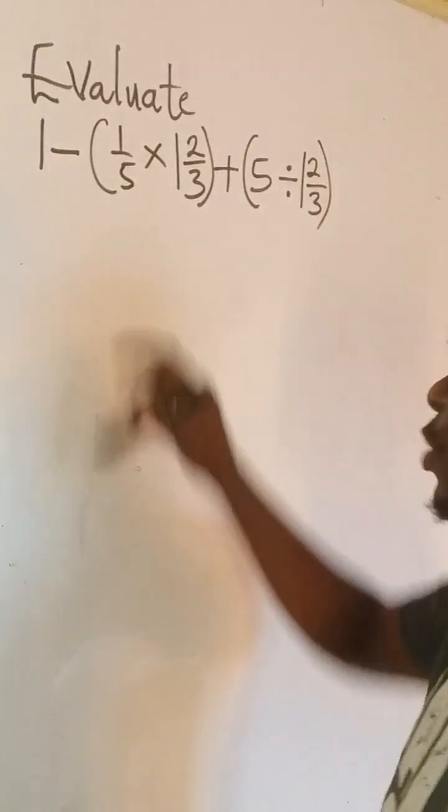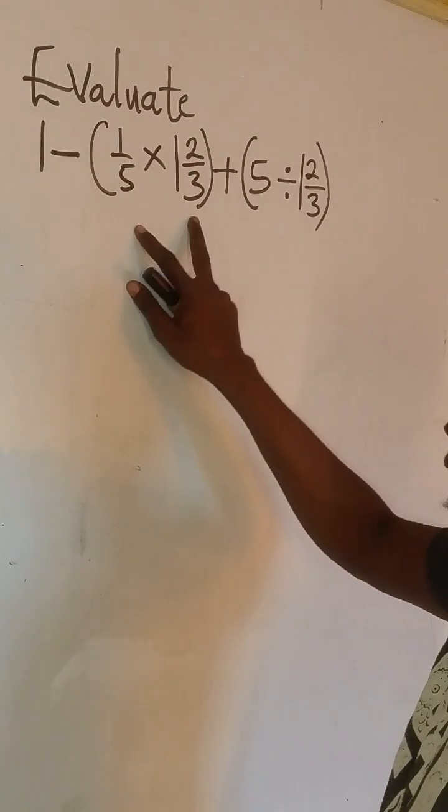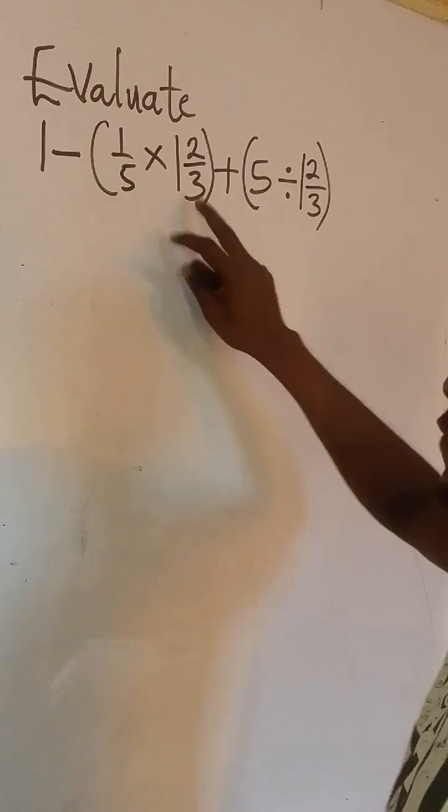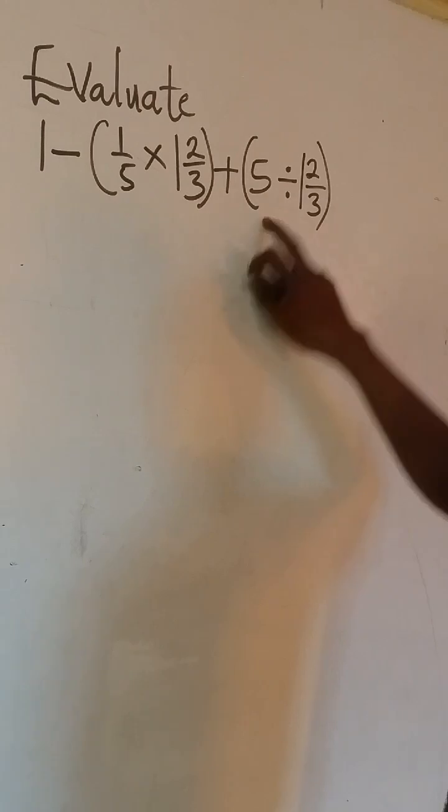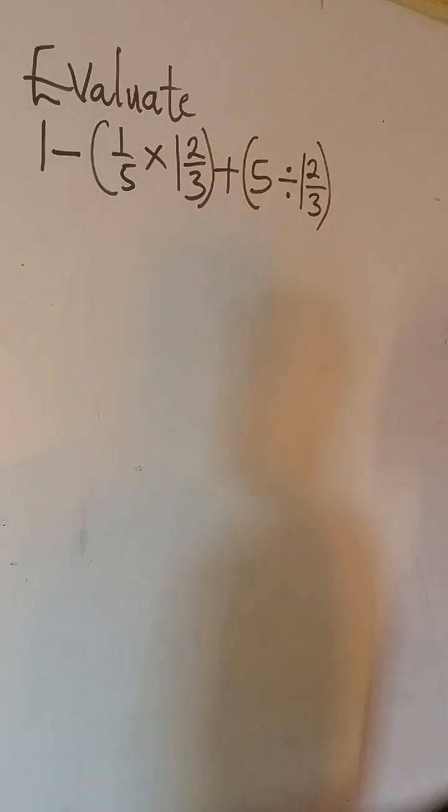Now let's just imagine this question we have: evaluate 1 minus into bracket 1 over 5 times 1 over 2 over 3 plus 1 over 5 divided by 1 over 2 over 3. So how can we solve this?